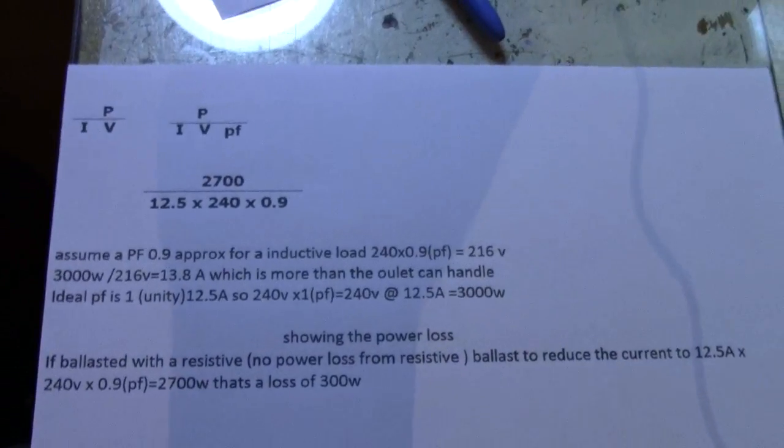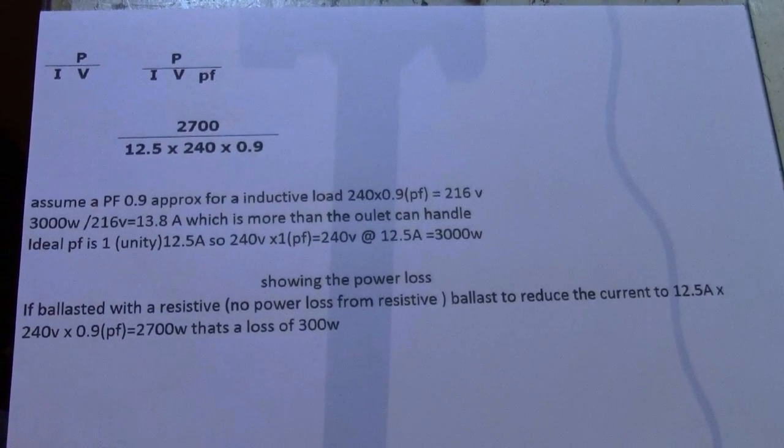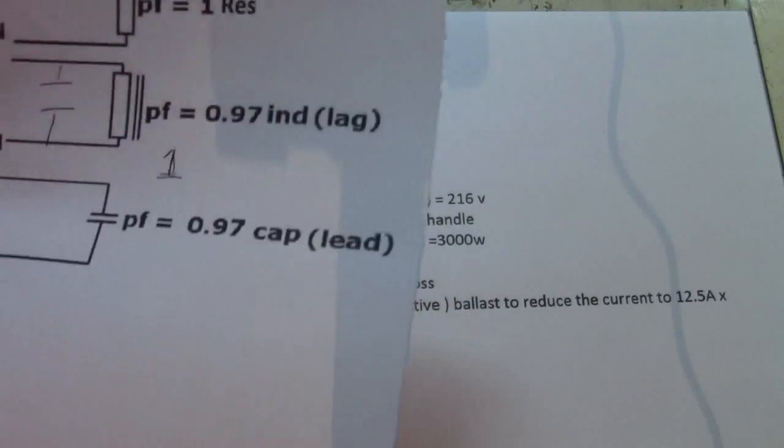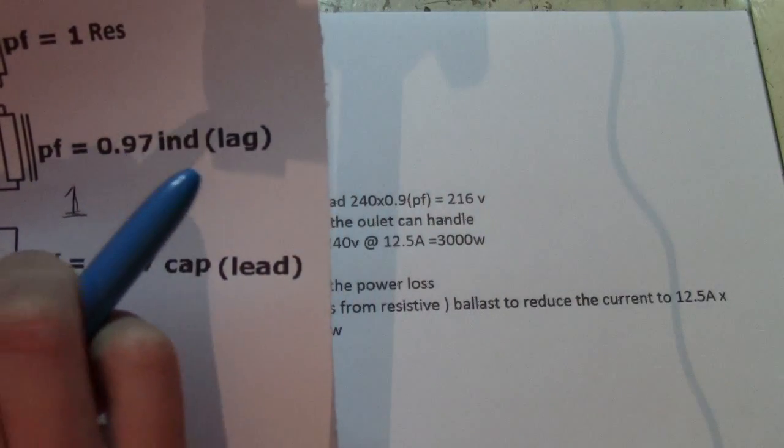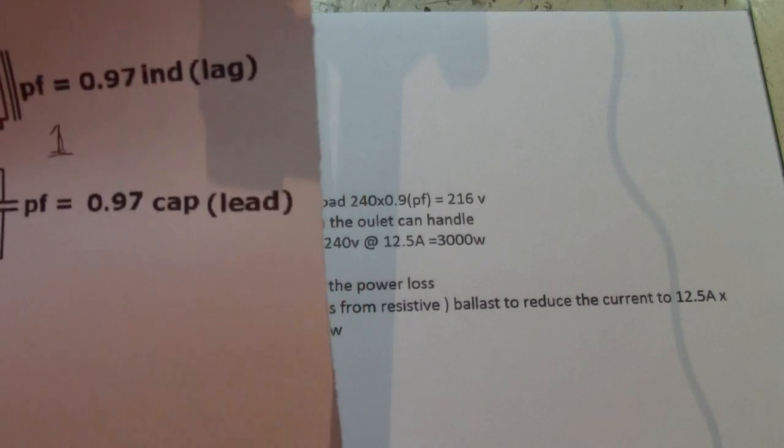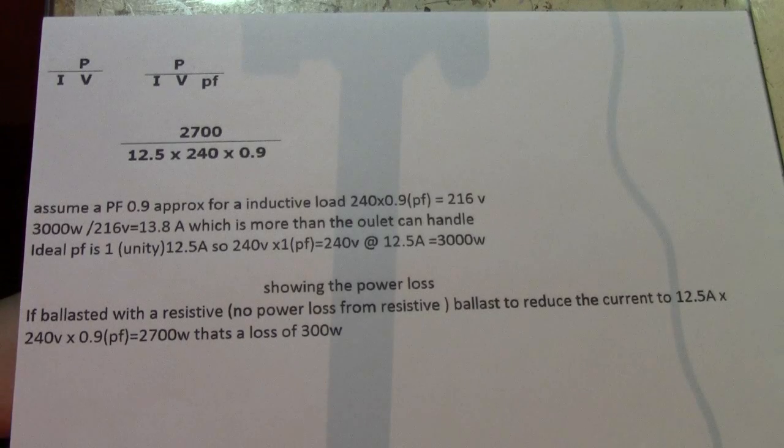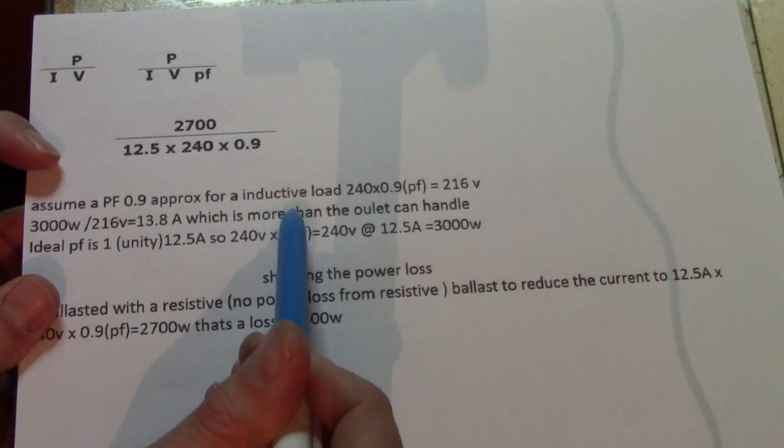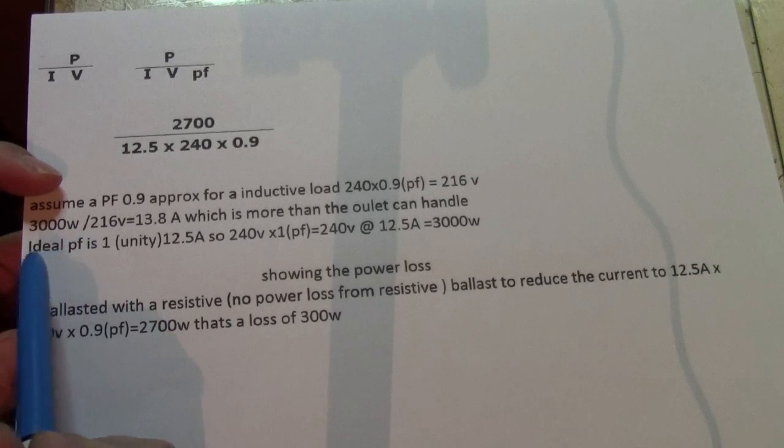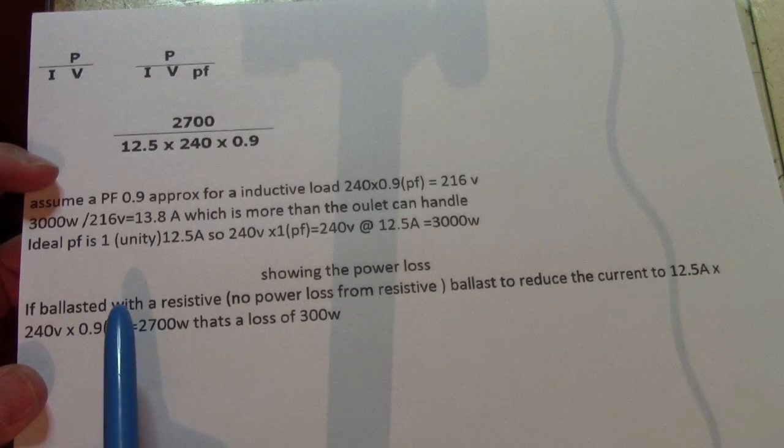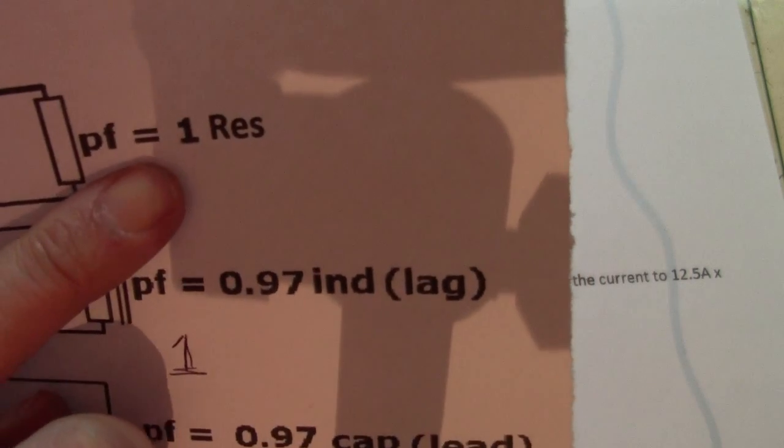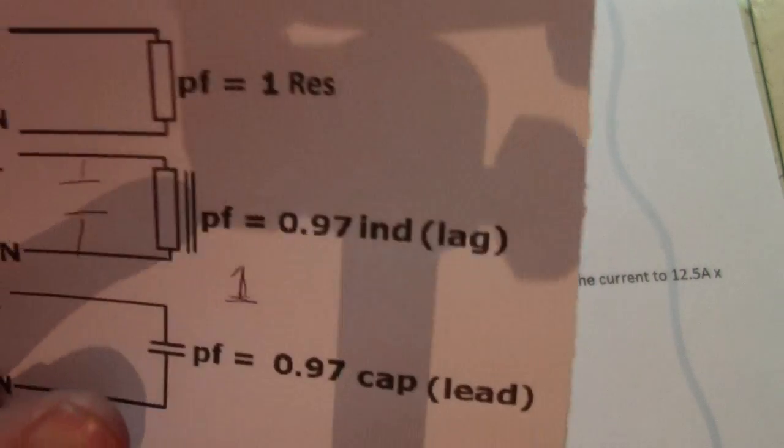Basically, I'm going to tell you, in an ideal world, we want a Power Factor of 1, which is unity. But we are going to assume that we have an inductive load. So that could be a transformer, for instance, with a Power Factor of 0.9. So we're going to assume a Power Factor of 0.9. Now, this is with a resistive load. So a resistive load has a Power Factor of 1. Power Factor of 1 is unity, which is what we want.